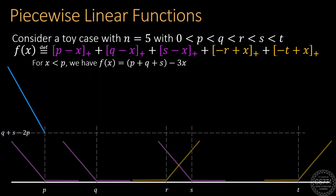For values of x less than p, we see that the fourth and fifth terms are zero, whereas the ReLU function acts as identity on the first three terms.